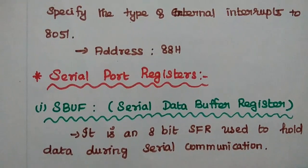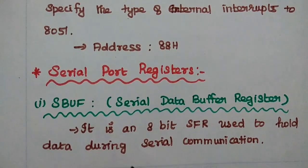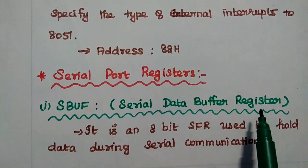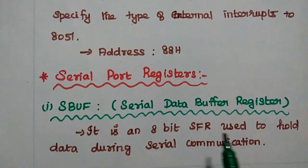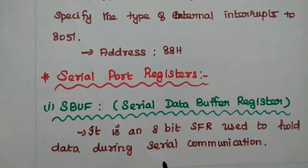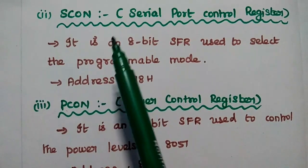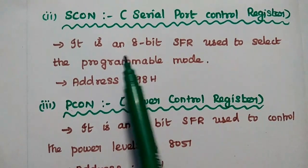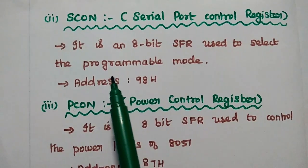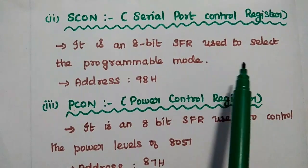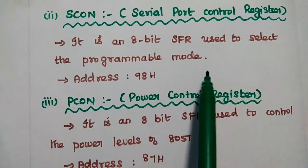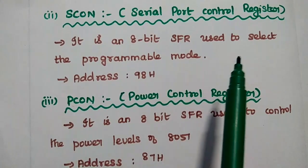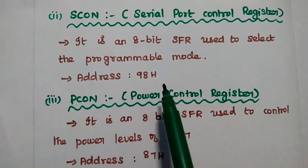The next category is serial port registers. The first is the SBUF register (serial data buffer register). It is an 8-bit SFR used to hold the data during serial communication. The next is the SCON register (serial port control register). It is an 8-bit SFR used to select the programmable mode of serial communication. There are four modes available, selectable via this register. Its address is 98H.